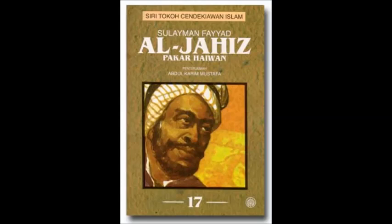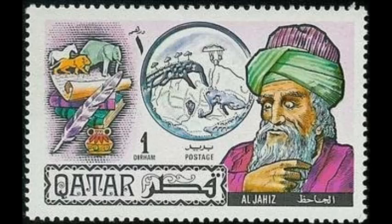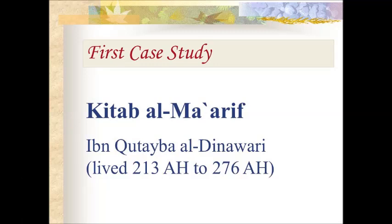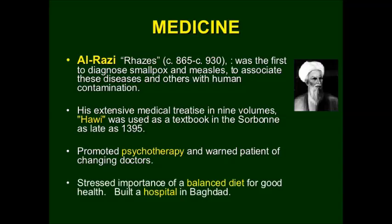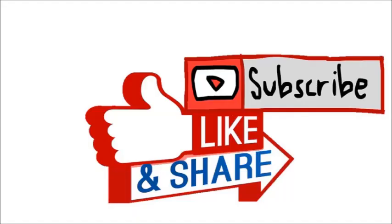Now let's look at Islamic scientists and their discoveries in biology. The main scientists are Al-Jahiz, Al-Dinawari, and Al-Razi, also known as Rhazes. Al-Jahiz is considered the founder and belongs to Qatar. Al-Dinawari produced notable works in nine volumes. Al-Razi contributed to psychotherapy, nutritional guidance for stressed patients, and built a hospital in Baghdad. This concludes the history of biology and its origin.